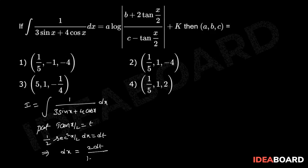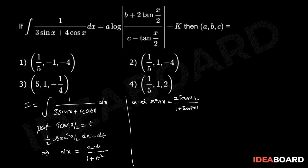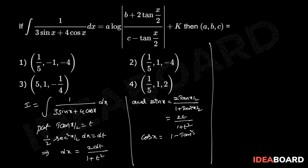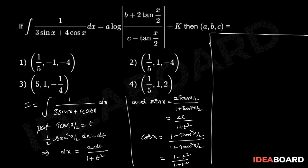So dx equals 2 dt by 1 plus tan square(x/2), that is 2 dt by 1 plus t square. Also, sin x equals 2 tan(x/2) by 1 plus tan square(x/2), which equals 2t by 1 plus t square. And cos x equals 1 minus tan square(x/2) by 1 plus tan square(x/2), which equals 1 minus t square by 1 plus t square.